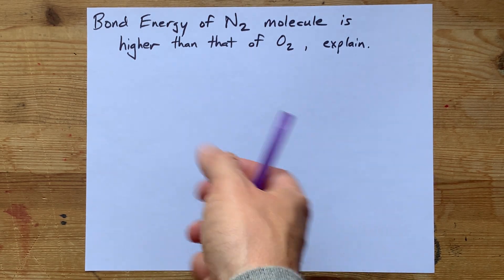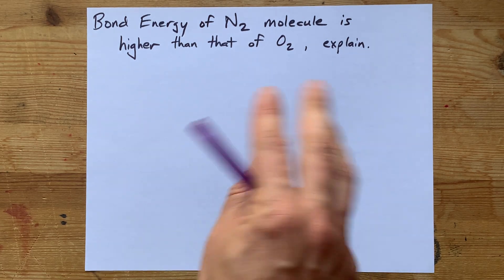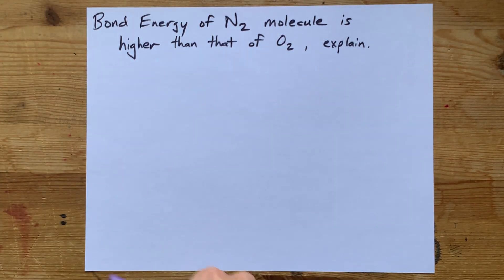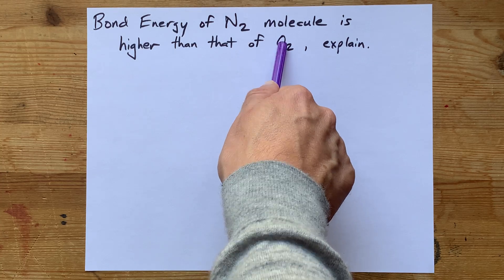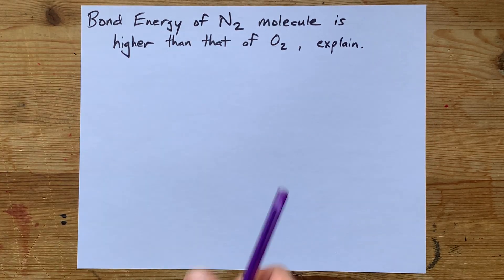Well, if you're just looking for the answer, it's because N2 is held together by a triple bond, which has six electrons of glue to hold two nuclei together. Oxygen, or O2, is generally thought of as a double bond, which only has four electrons of glue.